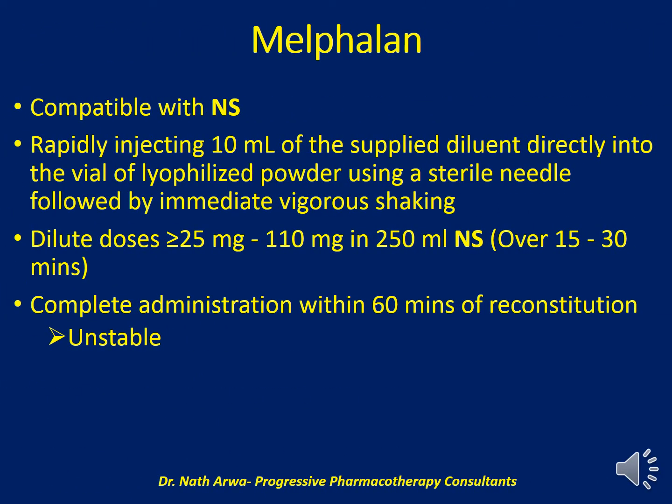Melphalan is compatible with normal saline — avoid using dextrose 5%. We should rapidly inject 10 ml of the supplied diluent into the vial of lyophilized powder and vigorously shake immediately. Dilute doses of 25 to 110 mg in 250 ml of normal saline. After homogenizing, this final solution should be infused over 15 to 30 minutes, and we should ensure administration is completed within 60 minutes of reconstitution, as the final solution is very unstable.